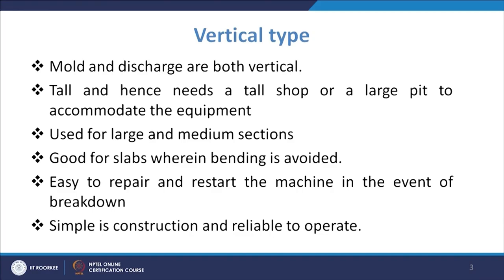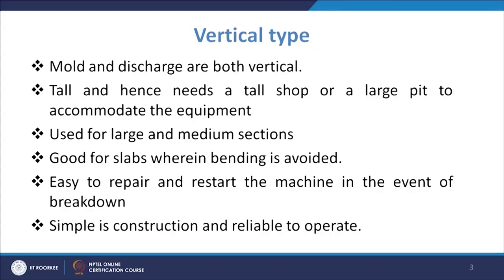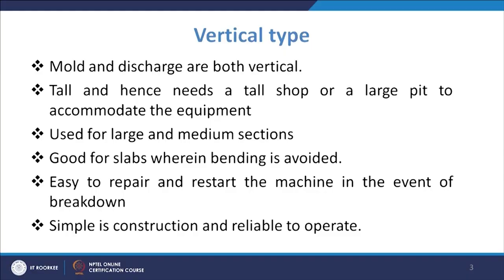This type is good for slabs where bending is avoided, and it is easy to repair and restart the machine in the event of breakdown. That is another advantage, because here you have ease in repairing as well as restarting since it is all vertical and there is no bending involved. It is a simple kind of construction and relatively easier to start, even when there is an interruption in the casting for any reason — it is relatively easier compared to other types of machines.